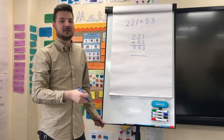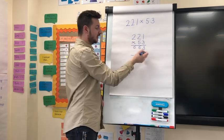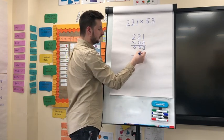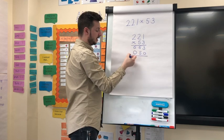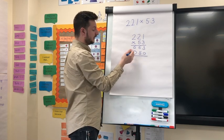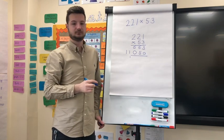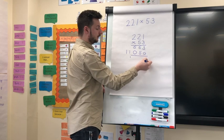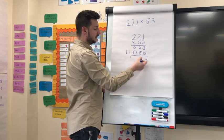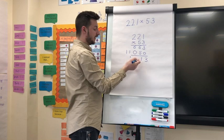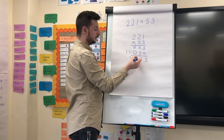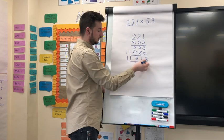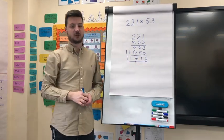Now we're multiplying by the 5 — but this isn't a 5, it's a 50 — so we put a 0 there to ensure our place value is correct. 5 times 1 is 5; 5 times 2 is 10, so write 0 and carry the 1; 5 times 2 is 10, add the 1 gives 11. Our final step is to add all those numbers up: 3 add 0 is 3; 6 add 5 is 11, so write 1 carry 1; 6 add nothing add 1 is 7; 1 add nothing is 1; and 1 add nothing is 1. So our answer is 11,713.